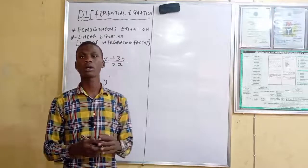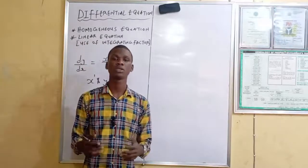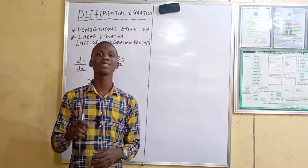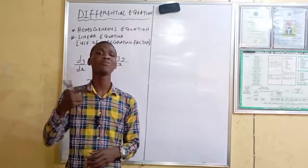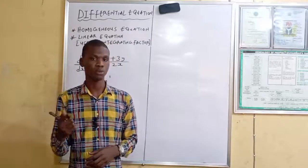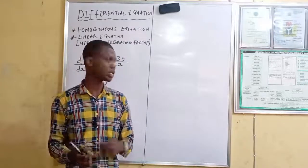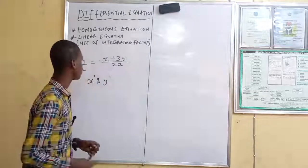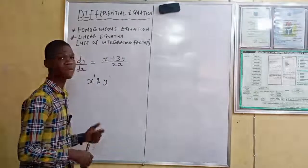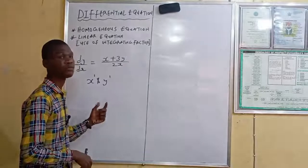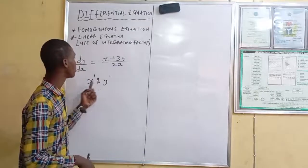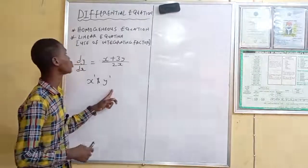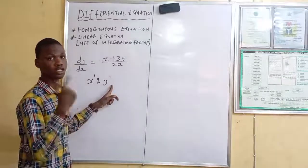The thing about the homogeneous equation is that you are still using separable variable. You are still implementing the method of separable variable. The power in this case is 1, meaning you proceed with the homogeneous equation approach.